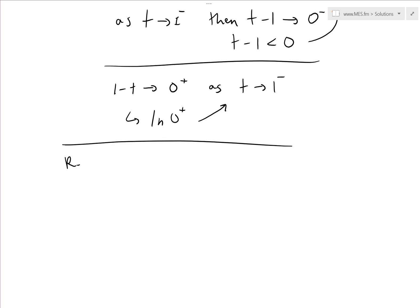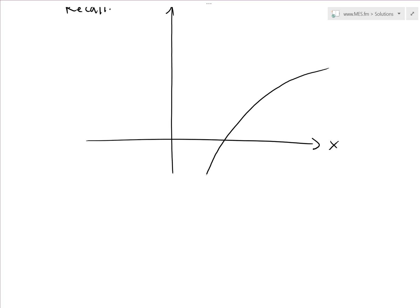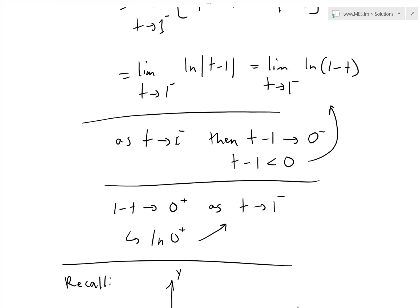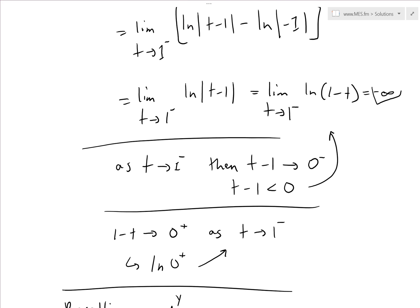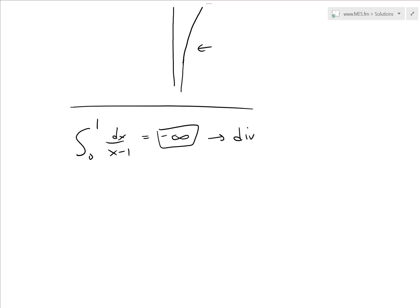Recalling the graph of ln: y equals ln(x) has 0 as a vertical asymptote, and as you approach 0 from the right side, the function approaches negative infinity. So this limit is approaching negative infinity. Therefore, the integral from 0 to 1 of 1 over (x minus 1) dx equals negative infinity, which means it is divergent.